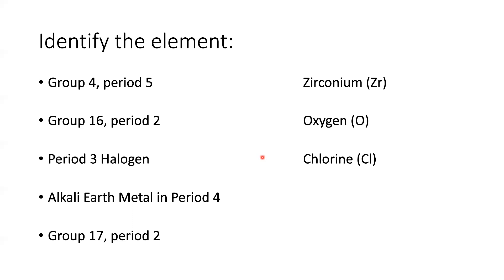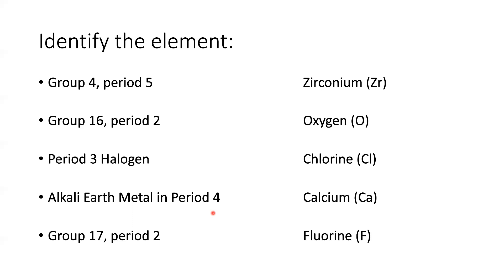Same thing with the next one. In this case, we're told the group first — alkaline earth metal — and then the fourth period, which would be calcium. Then continuing with the final one: group 17, period 2. Again, we just want to recognize that for group 17, period 2 is going to be the top element in that one, because there's nothing in period 1 for group 17. So we would just be looking at fluorine — similar to the second example where we're looking at oxygen, just one group over.